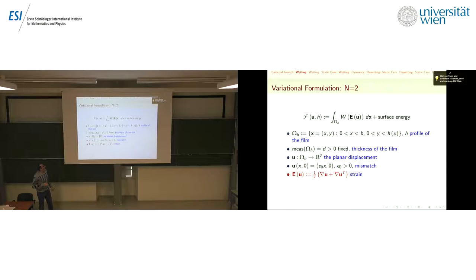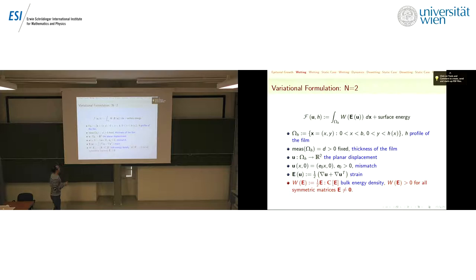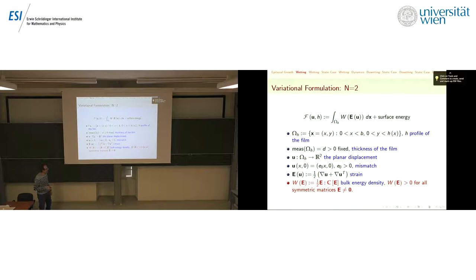Using linear elasticity, e(u) is the symmetrized gradient — this is just the strain. The elastic energy is the usual one. Most applications will be isotropic, but c is the usual fourth-order tensor. We assume convexity, so everything is nice and regular.